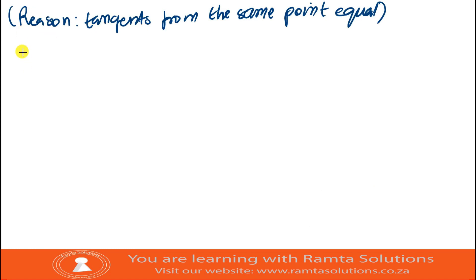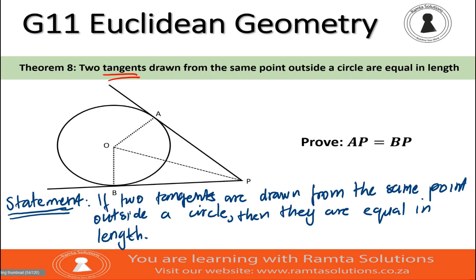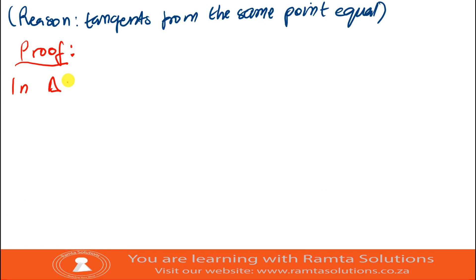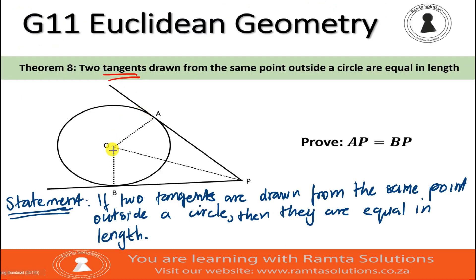Let's prove that AP is equal to BP. So, our proof, we will say, let's try the two triangles in triangle AOP and triangle BOP. What do we say? Something that you should know is that O here is the center of the circle.